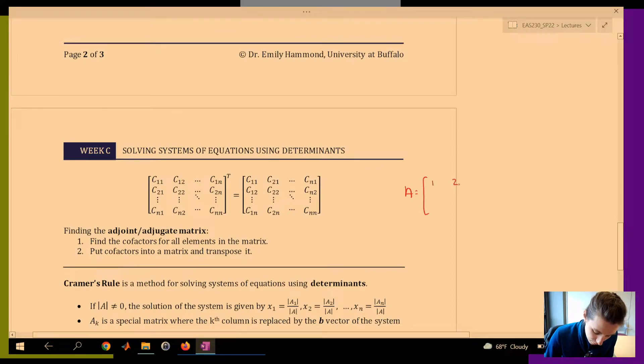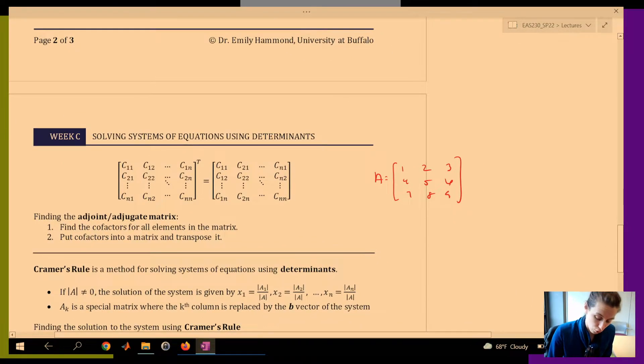So if A looks like this, all you're going to do is find all of your cofactors. Find the cofactors corresponding to this number, so C11, then C12, then C13, then C14, C15, C16, etc., all the way through. So here I would have 9 cofactors. You're going to put those all into a matrix and then transpose it.